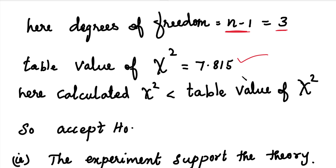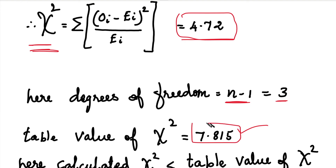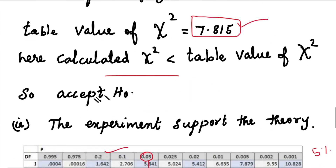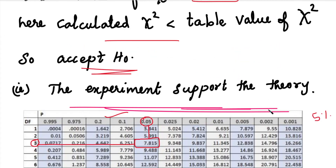At the conclusion, we compare the table value and calculated value of chi-square. The calculated chi-square value 4.72 is less than the table value 7.815. So we accept H0 — the experiment supports the theory. This is the answer.